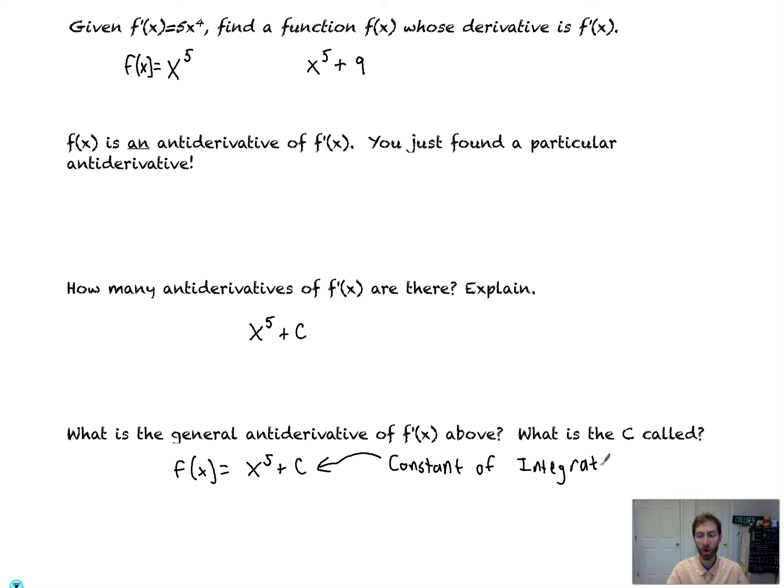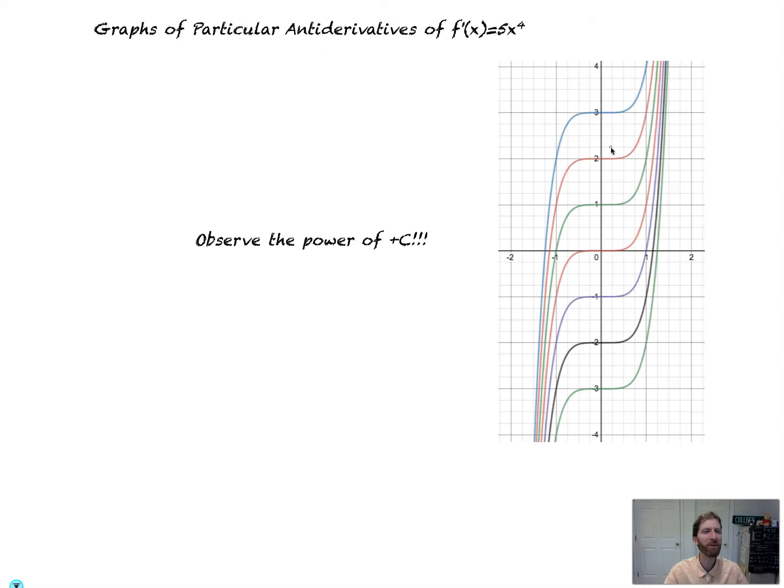Very cool. So whether you take the antiderivative or you integrate, those are the same things. They're synonymous words. So this is the constant of integration. This is known as the general antiderivative. And that's because we could have any constant, and the derivative of it would be zero, and we'd still get 5x^4. That's going backwards. That's undoing the derivative and saying, where did we come from to get that derivative? That's big.